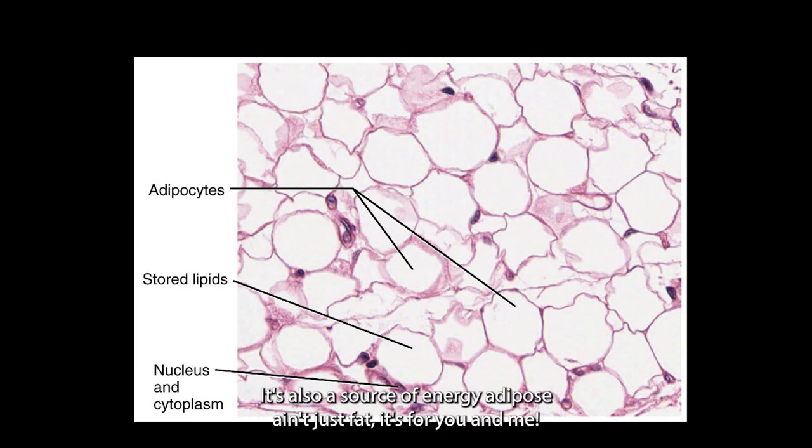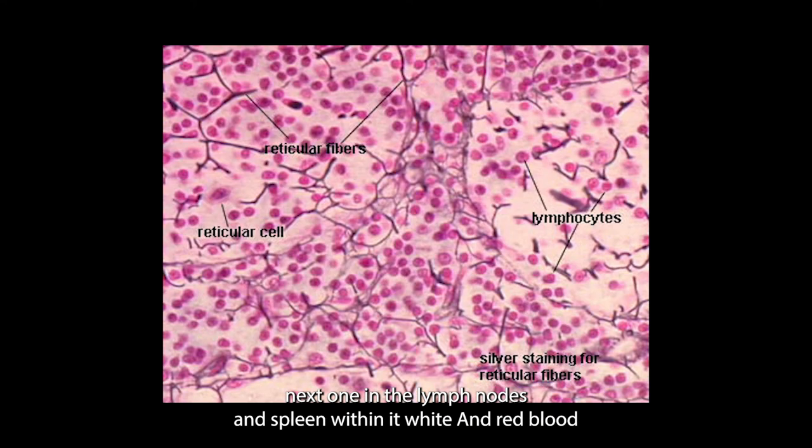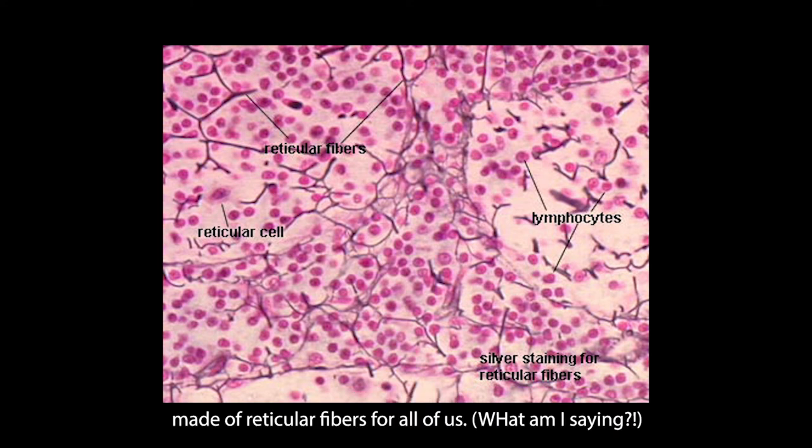Adipose ain't just fat. Next one is in the lymph nodes and spleen. Red and white blood cells are seen. They are housed in reticular CT made of reticular fibers.